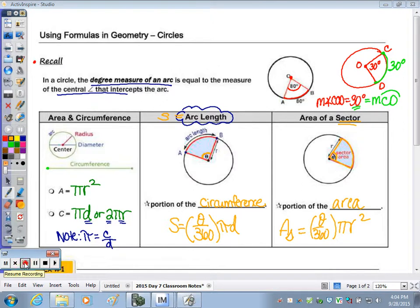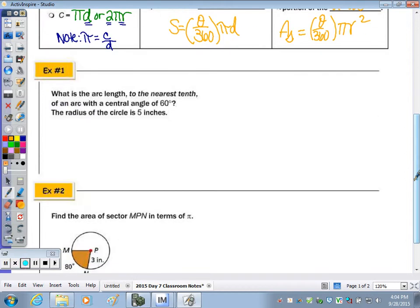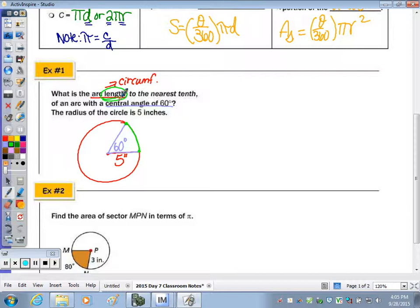So moving down to example number one, it says what is the arc length? Arcs are on the outside of the circle, so we're going to be using circumference. To the nearest tenth of an arc with a central angle of 60 degrees, and the radius of the circle is 5 inches. So drawing a picture, here's my circle with the center. Radius, 5 inches. It has a central angle of 60 degrees, so using this radii, I'm going to make an angle here of 60 degrees. What is the length of the arc? So how long is this arc? Arc length is how long it is, in terms of a linear measure, not a degree measure. So S is what I'm looking for.